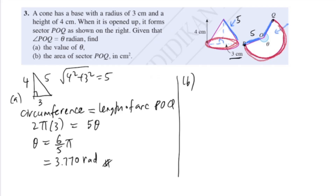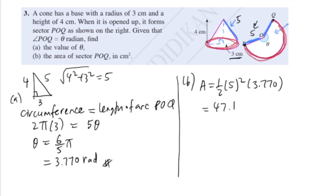For the second part, find the area of sector POQ. Now that we know the radius is 5 and the angle is 3.770 radians, we use half R squared theta: half times 5 squared times 3.770. Using your calculator you should get 47.13 cm squared.